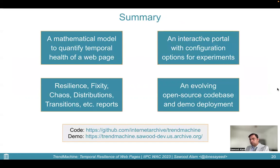Finally, to summarize: we introduced a mathematical model to quantify the temporal health of a web page. We built an interactive portal with configuration options for experiments. We described various Trend Machine reports like resilience, fixity, and chaos. We released an evolving open-source codebase and provided a demo deployment. You may explore the demo at trendmachine.saur-dev.us.archive.org. We will see you in the Q&A session. Thank you.